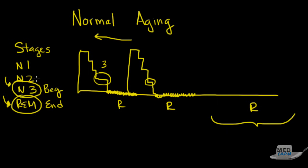Unfortunately, as we get older, we see a reduction in both of these types of sleep and an increase in this very bland N2 type of sleep, which really is more of a light sleep. This is what we see with normal aging.